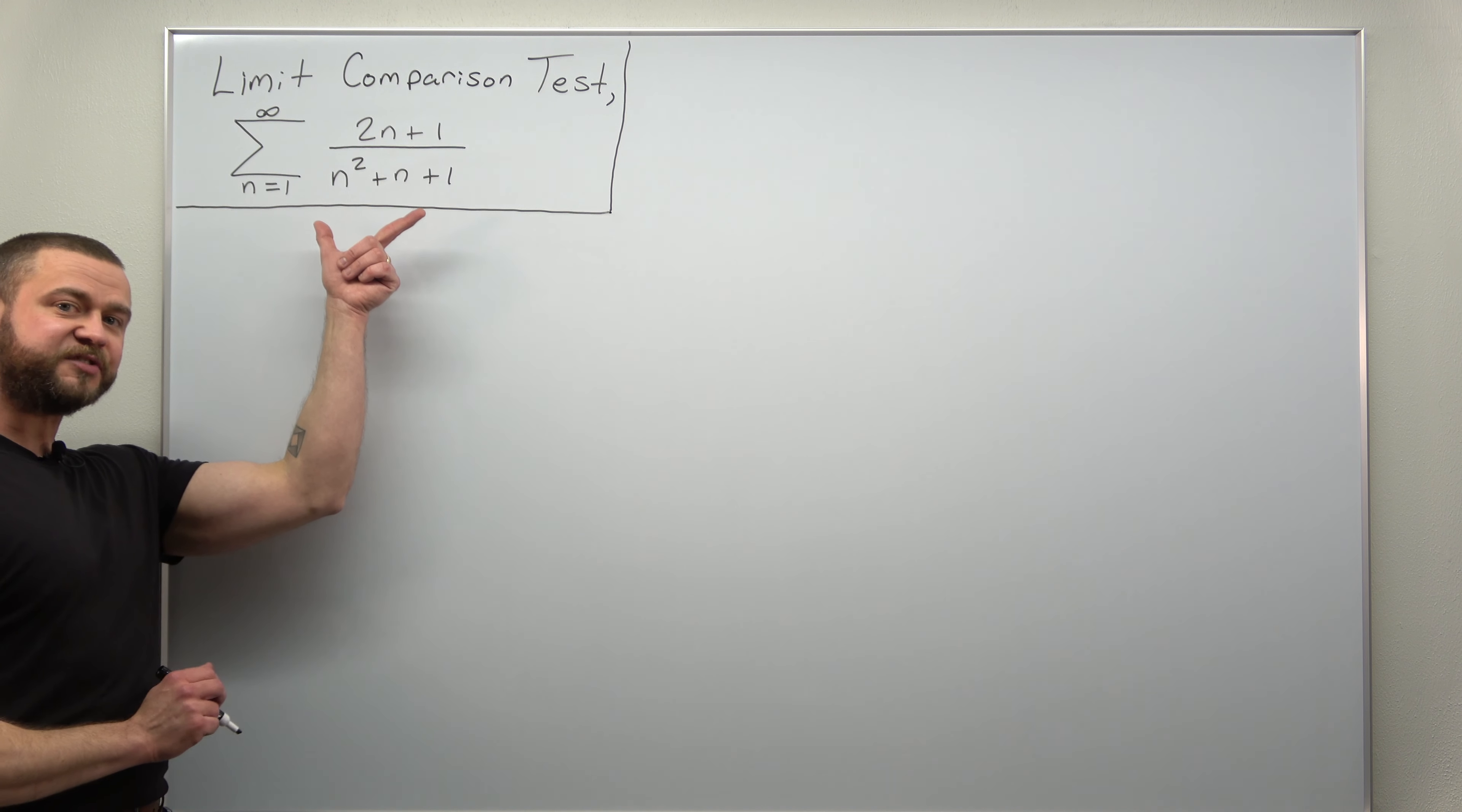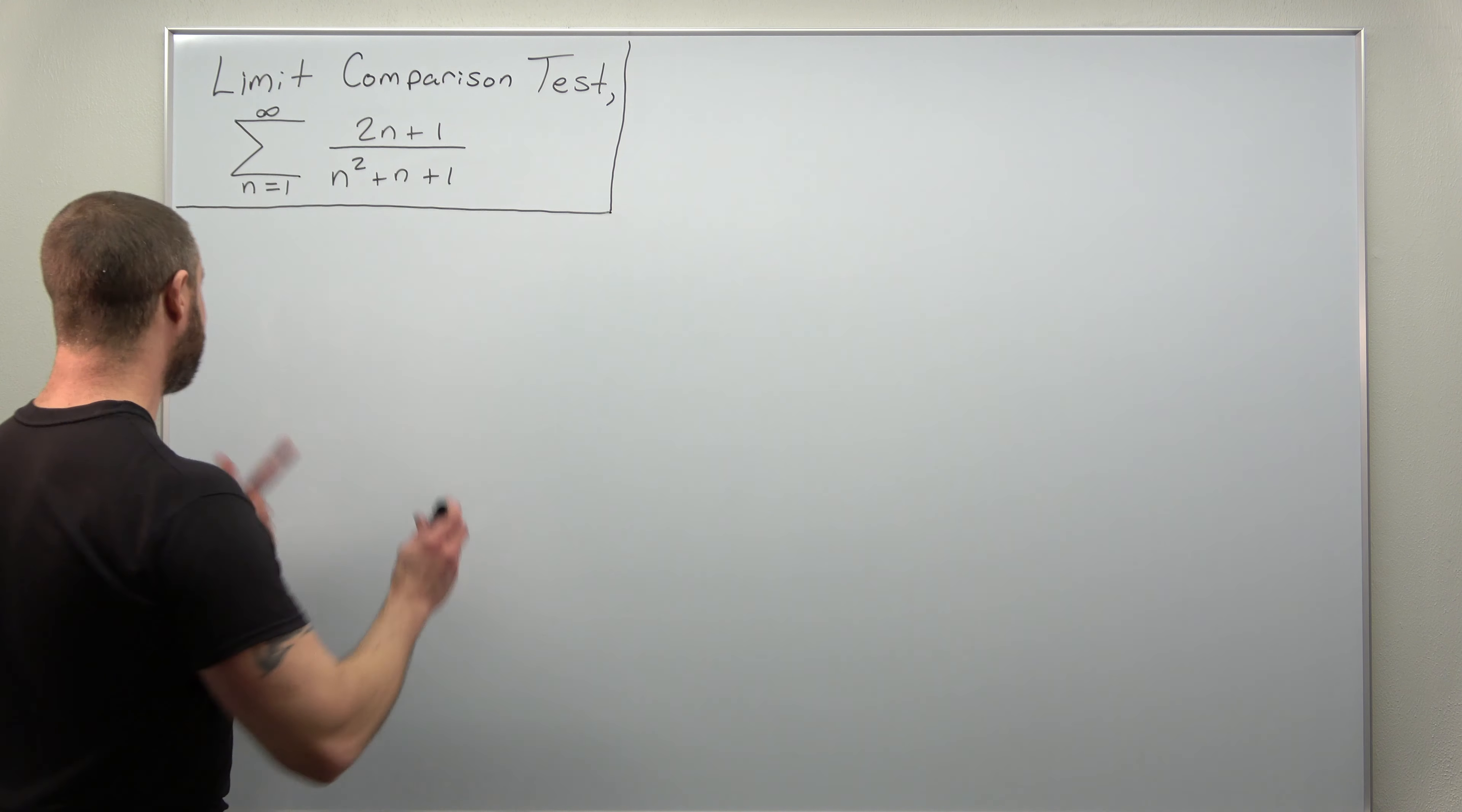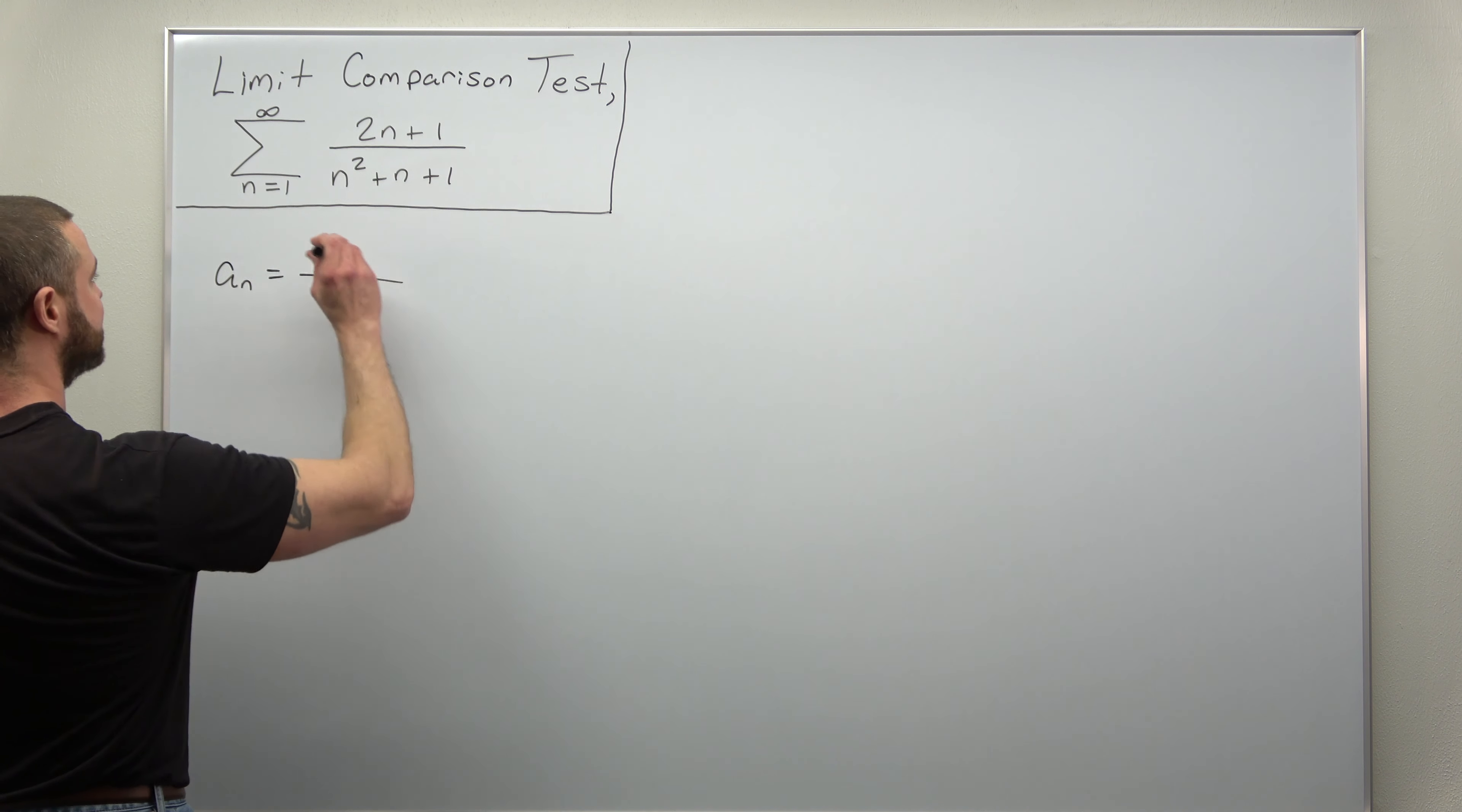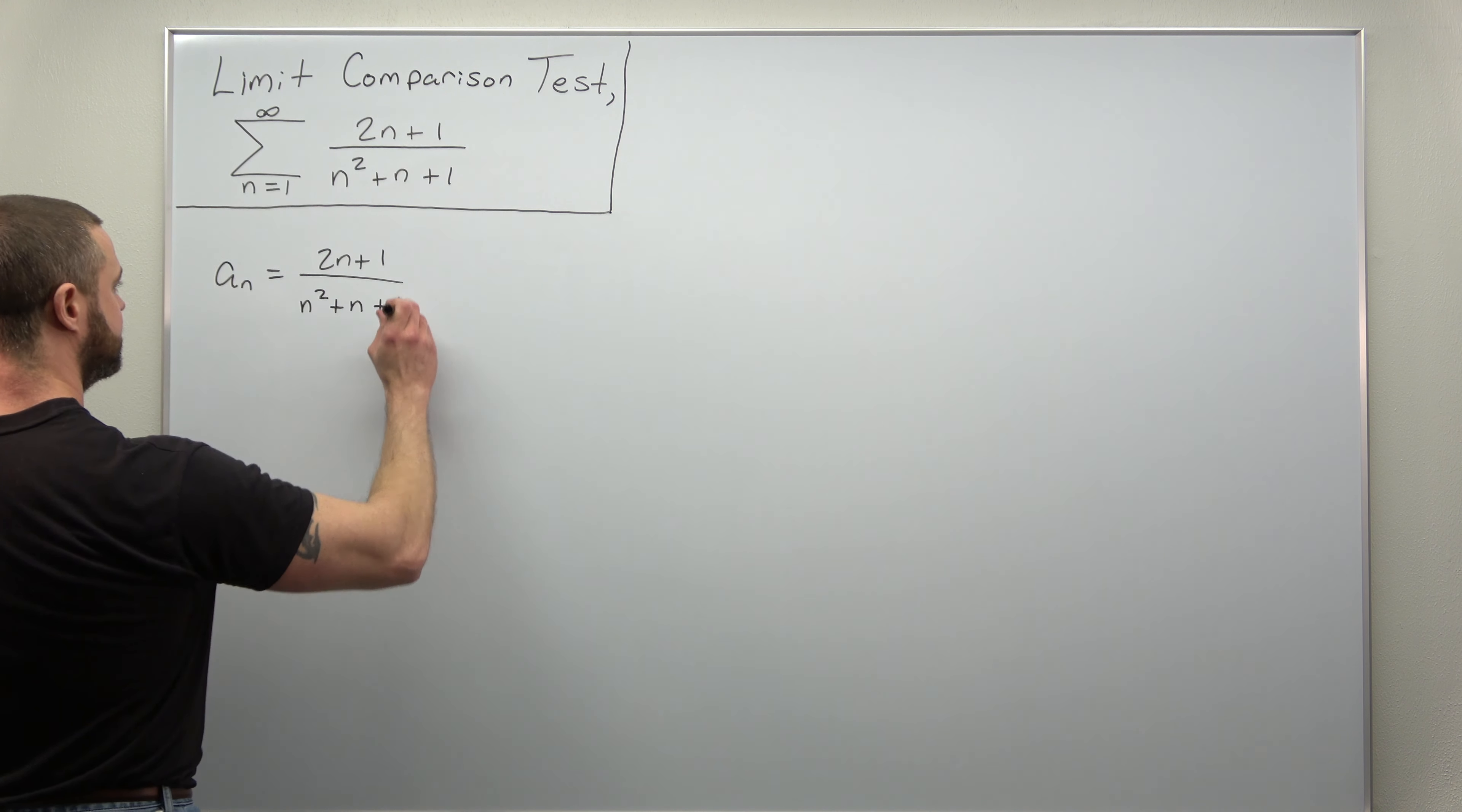We have our given infinite series. We'll denote the term of that as a sub n. So we'll define a_n as 2n plus 1 divided by n squared plus n plus 1.